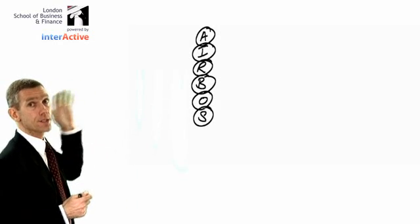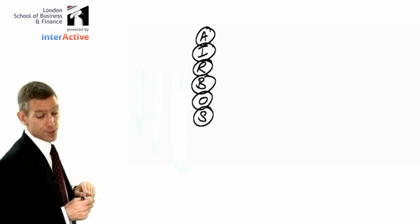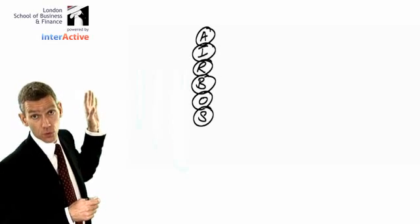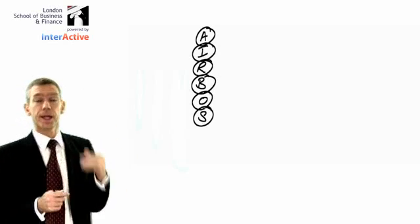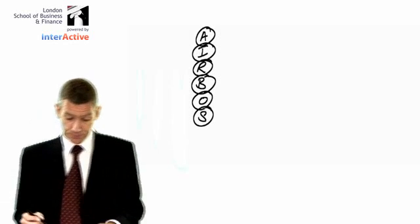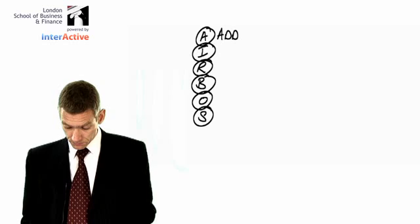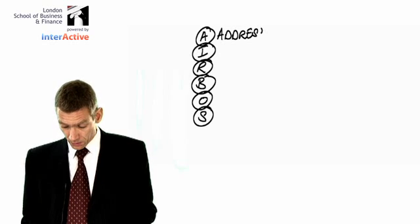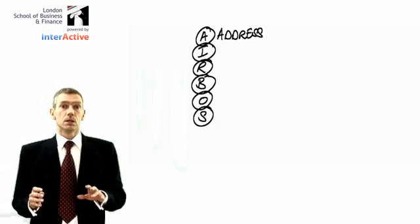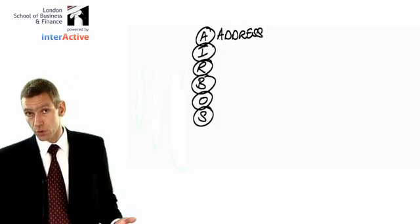A is for address. I is for introduction. R is for responsibilities. B is for basis of opinion. O is for opinion. And S is for signature. Starting again at the top: A — address. The audit report is addressed to shareholders, of course.